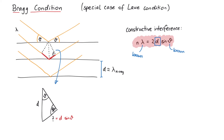Note that, since n can be any integer, this equation does not pose a restriction on how small lambda can be. However, it does pose a restriction on how large the wavelength can be. For a given d and theta, we get the largest lambda for n equals 1. And since the sine function can only take on values between 1 and minus 1, the largest possible value for lambda is 2d. Thanks for watching.